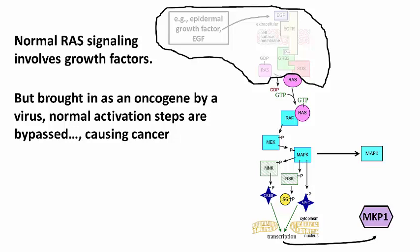In other words, cells bypass normal controls on RAS function and maintain RAS-GTP at abnormally high levels.